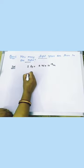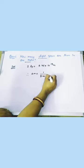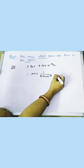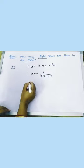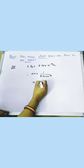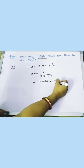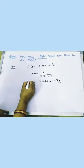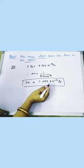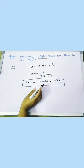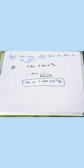From the relation one light year equals 9.46 into 10 to the power 15 meters, we can transpose to find that one meter equals 1 divided by 9.46 into 10 to the power 15 light years. Solving this gives 1.057 into 10 to the power minus 16 light years. So in one meter there are 1.057 into 10 to the power minus 16 light years.